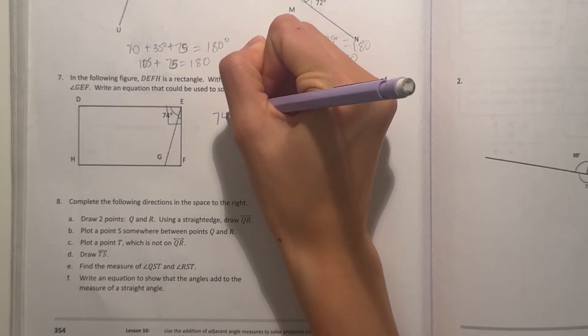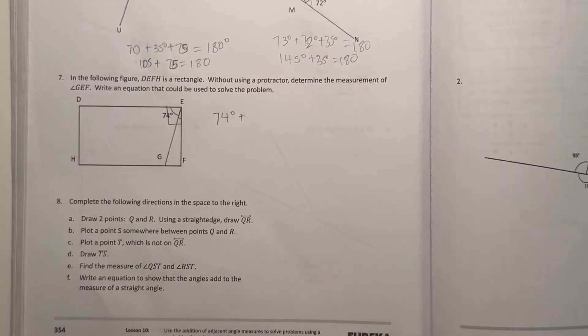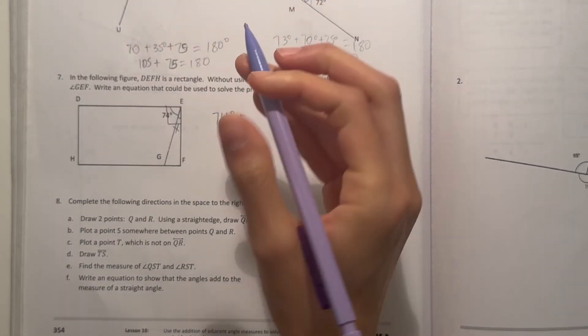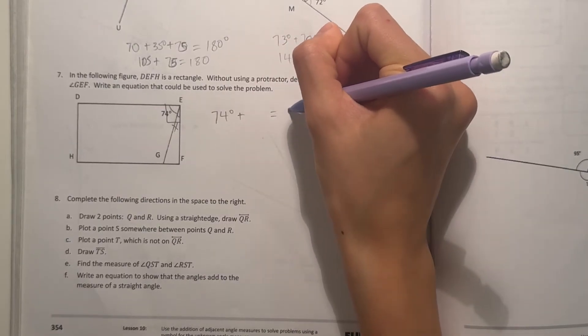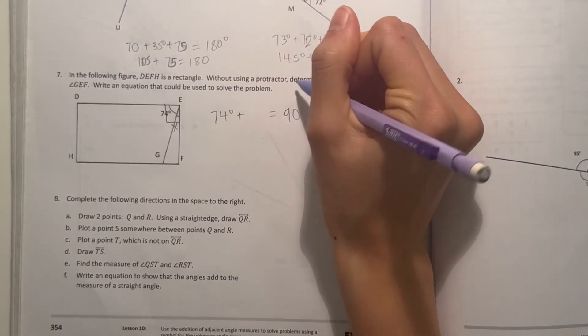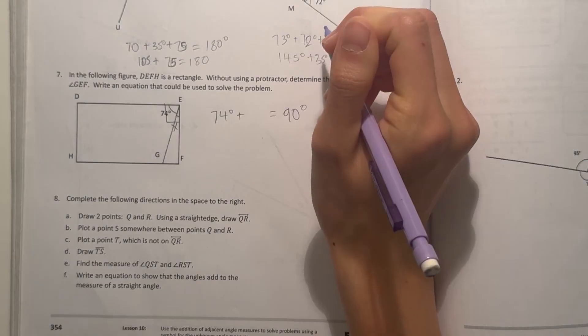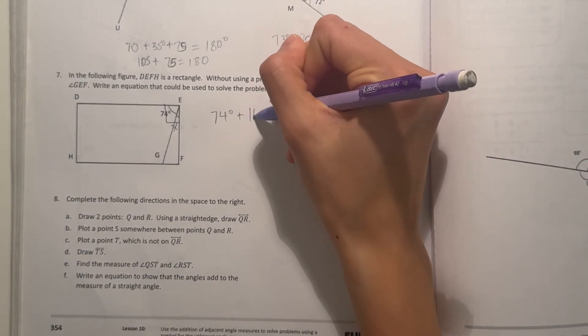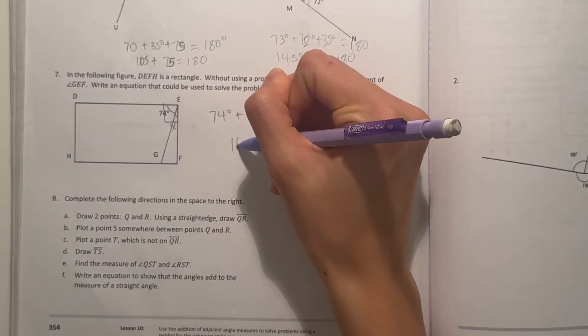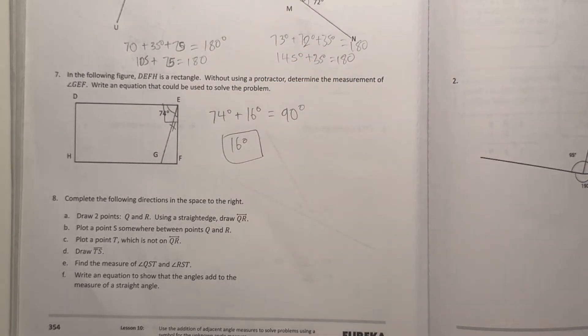So that's 74 degrees plus x, because we're finding GF. x is our angle measurement, equals 90 degrees because the right angle is 90 degrees. 90 minus 74 is 16. So that means x would be 16. So 16 degrees would be your answer.